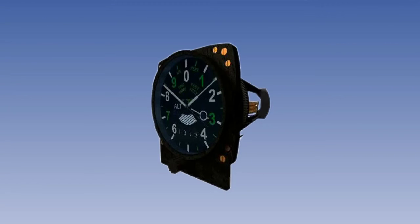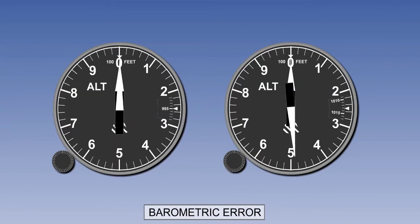The errors we have looked at so far arise from the design and construction of the altimeter and the pressure sensing system. When using the pressure altimeter, however, there are two further errors which need to be considered. The first of these is known as barometric error and in the pressure altimeter it can account for the greatest error of all. Barometric error is straightforward to understand provided we remember that the pressure altimeter is actually sensing static air pressure which is expressed as altitude according to the pressure lapse rate of the ISA atmosphere. Let's assume that pressure at the airfield's elevation of 275 feet is 995. The pressure setting which the altimeter uses as a datum will be the one we select in the altimeter subscale by turning the setting knob.